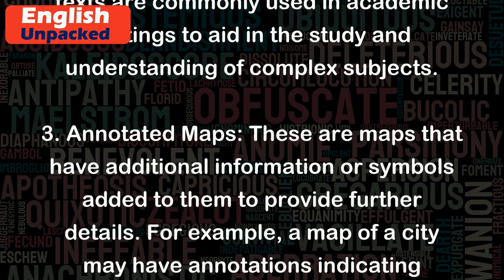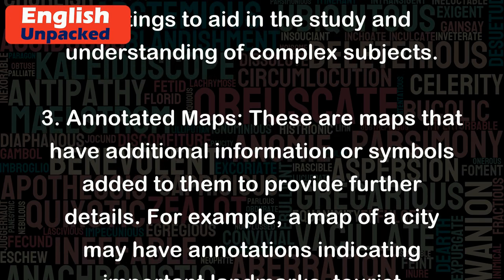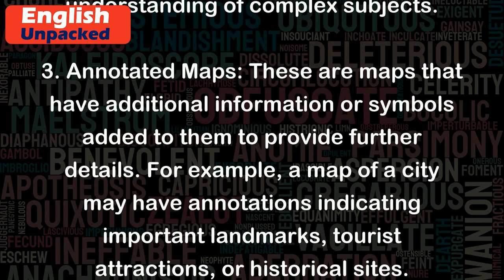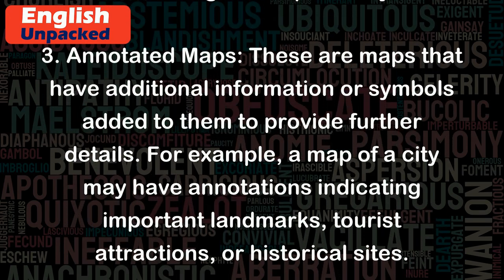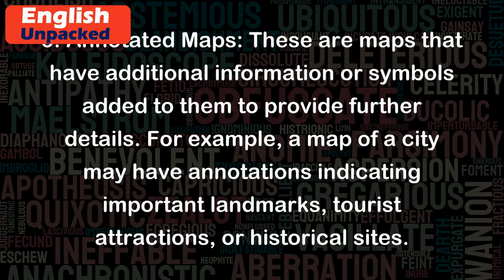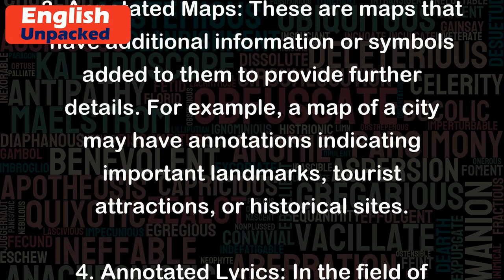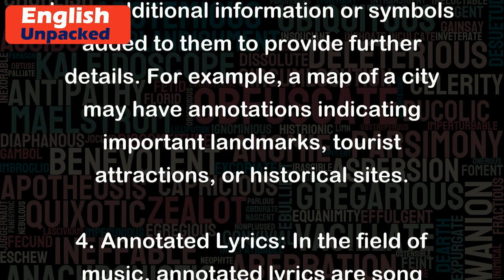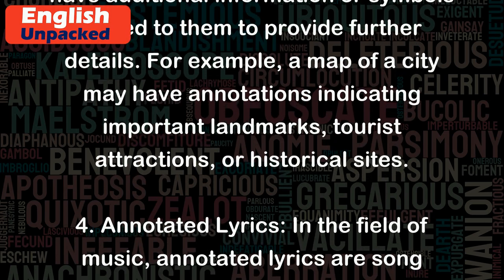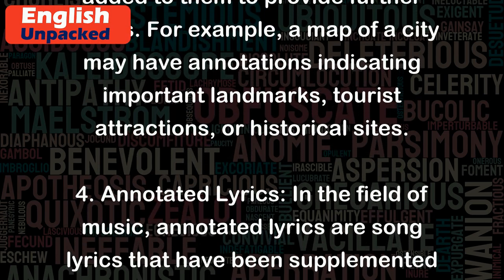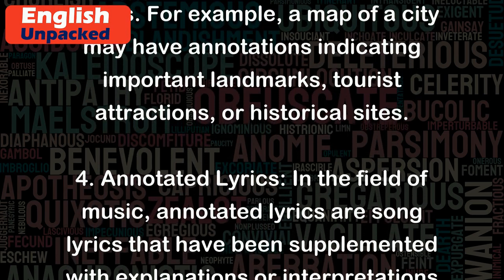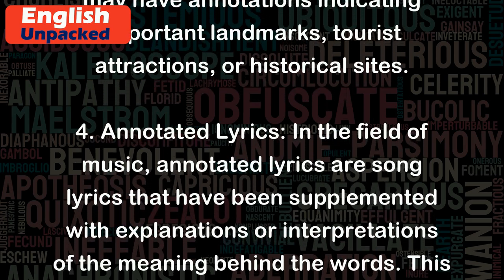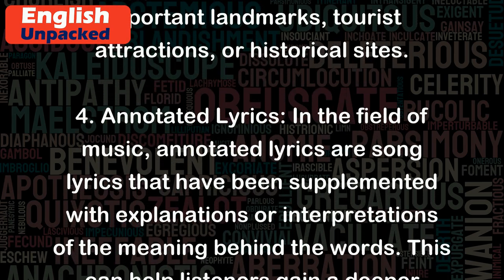Example 3: Annotated maps. These are maps that have additional information or symbols added to them to provide further details. For example, a map of a city may have annotations indicating important landmarks, tourist attractions, or historical sites.